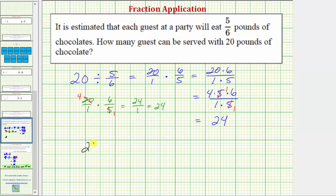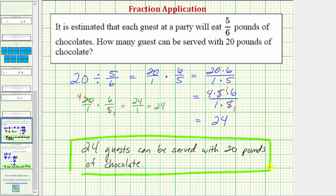Either way, we now know that 24 guests can be served with 20 pounds of chocolate. I hope you found this helpful.